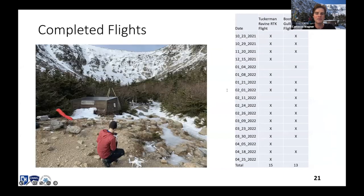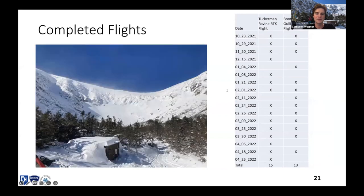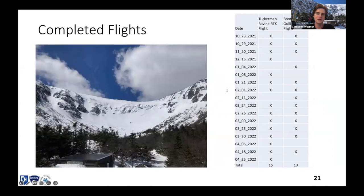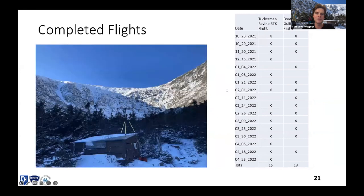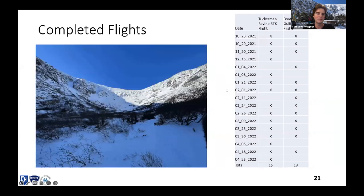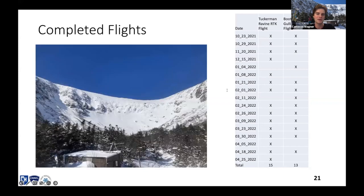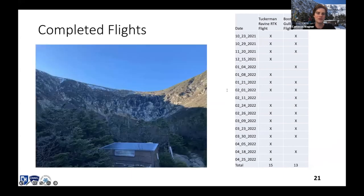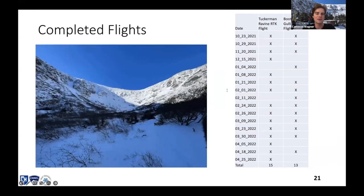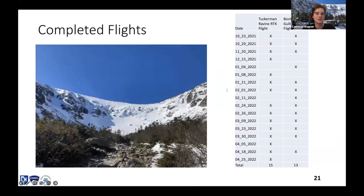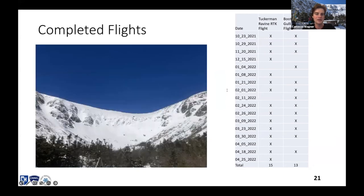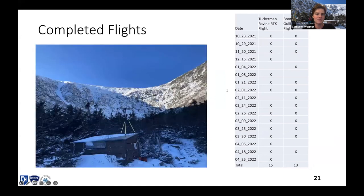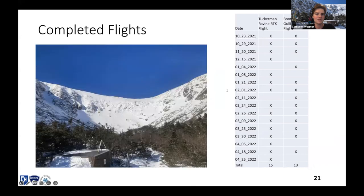Here's a summary of completed flights over the season: 15 in Tuckerman Ravine and 13 for the Bootspur Gullies area. Sometimes only one area could be flown — Bootspur Gullies was a bit more sheltered from wind. I preferred to fly Tuckerman Ravine because that's where the most interesting things were happening. I also took a picture from a similar perspective each visit to create a visual time series of all the days I flew, from early season through spring.